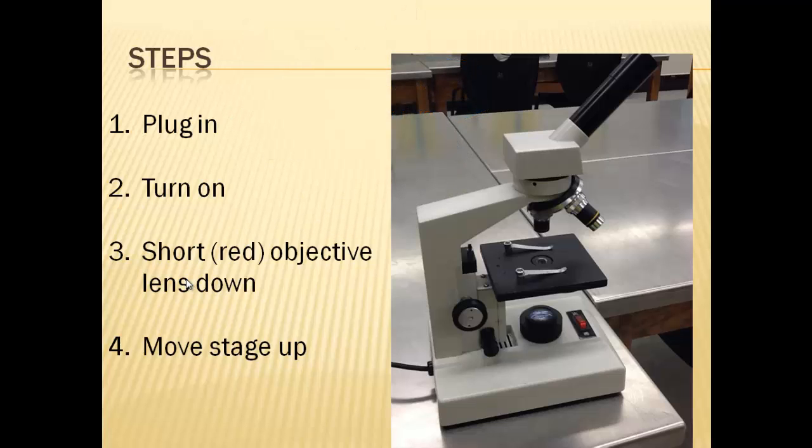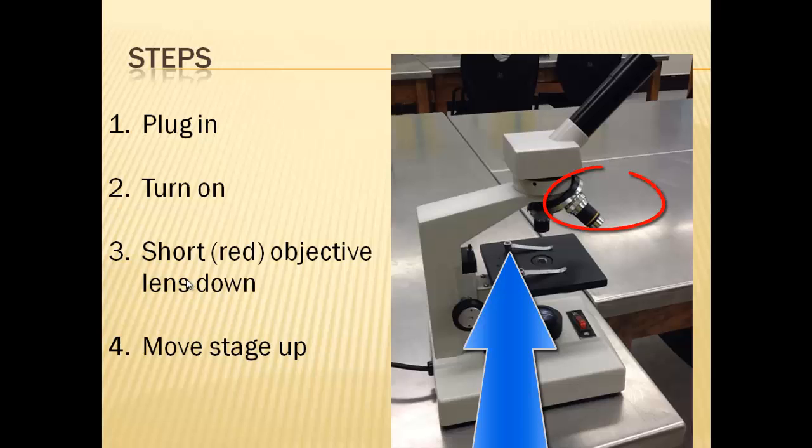Once you plug it in and turn it on, you want to make sure that you have the short red objective lens pointing down. That's right there. The reason why you want to do that is because oftentimes the next step where you're supposed to move the stage up, if you have one of the others pointing down, the stage will actually go past the point of where those objective lenses are coming down, and you can actually break or shatter one of those other objective lenses. So we really want to make sure we're just having the red one pointing down. Those are the first four steps.